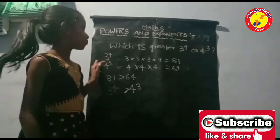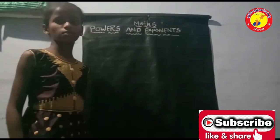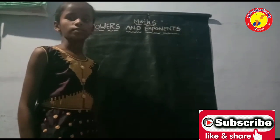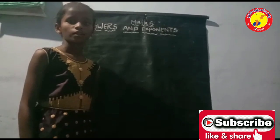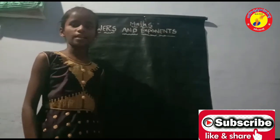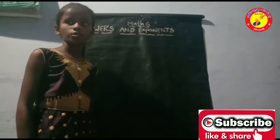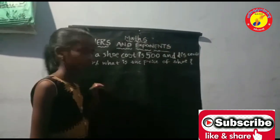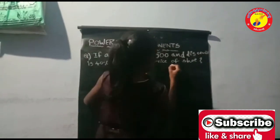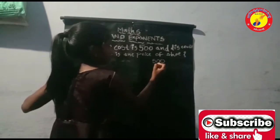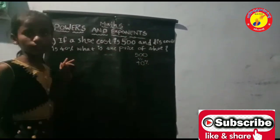These are all about powers and exponents. I would also like to share a trick about discounts. We see discounts in restaurants and shopping malls. I was very curious to solve discount problems, so now I will explain a discount problem. For example, if a shoe costs 500 and the discount is 40%, what is the selling price of the shoe?